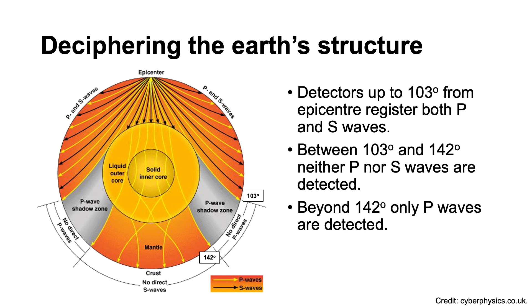However, the P waves are not refracted as much as we'd expect if the whole of the core were liquid, indicating that the inner core is actually solid. Beyond 142 degrees, only P waves are detected, because the S waves are unable to pass through the outer liquid part of the core. So in this way, earthquake waves have given us some very important clues about what the interior of the Earth is really like.